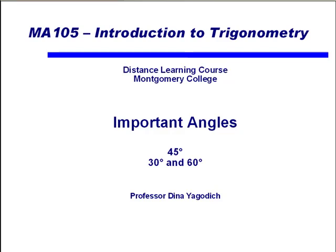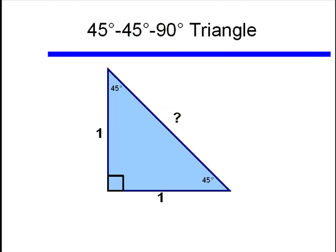This lecture discusses some important angles that you will use over and over in trigonometry. Those are the 45 degree angles, and the 30 and 60 degree angles. But let's focus on the 45 degrees right now.